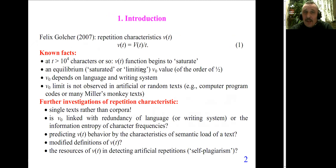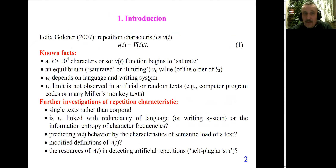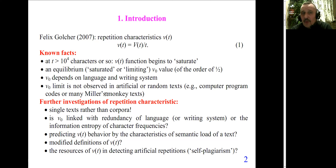Moreover, this equilibrium is of the order of one half for most natural texts. It is also known that V sub zero depends on the language and on the writing system. Moreover, and this is a crucial point, the V sub zero limit does not exist for any artificial or random texts. Artificial text may be a program code; random text may be a so-called Miller's monkey text.